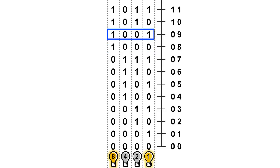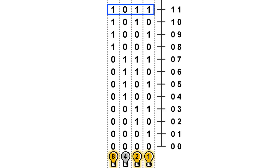So for instance, 10001 is the 8 lightbulb plus the 1 lightbulb, which is 10 in decimal. And finally, 1011 is the 8 lightbulb plus the 2 lightbulb plus the 1 lightbulb, which is 11 in decimal.